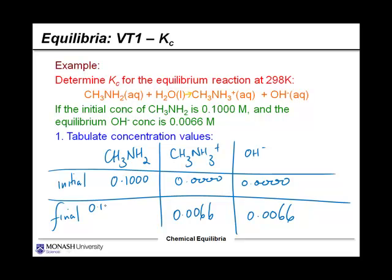So this value should be the same. Similarly, that stoichiometry is going to give us the new concentration of methylamine. It's going to be 0.1, the initial concentration, minus 0.0066 because we must have used it up.